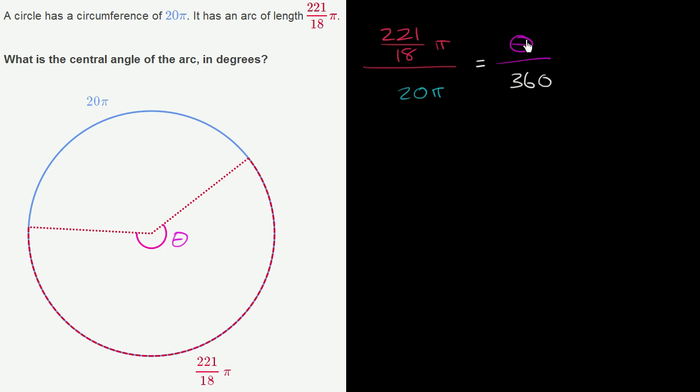This will give us our theta in degrees. If we wanted it in radians, we would think of it in terms of 2π radians around the circle. But it's 360 degrees since we're in degrees.